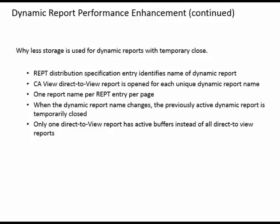Wireless storage is used for Dynamic Reports with Temporary Close. The REPT Distribution Specification Entry identifies the name of the Dynamic Report. CA View Direct-to-View Reports is open for each unique Dynamic Report Name — one Report Name per REPT Entry per page. When the Dynamic Report Name changes, the previously active Dynamic Report is temporarily closed, so only one Direct-to-View Report has active buffers instead of all Direct-to-View Reports.